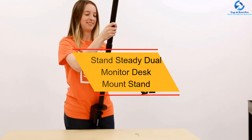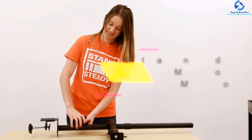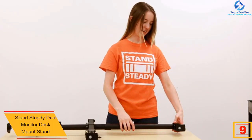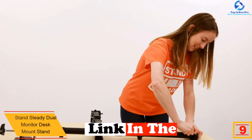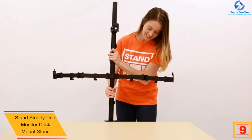Moving on at number 9, we have the Stand Steady Dual Monitor Desk Mount Stand. This particular stand is characterized by two arm clamps which are able to hold monitors ranging from 13 to 32 inches. The stand is black in color and it is made using light but strong materials.